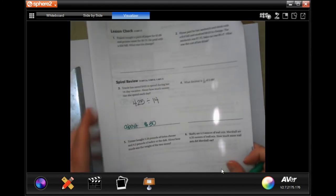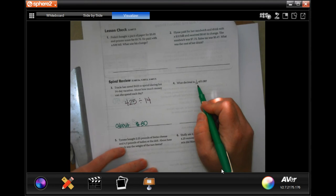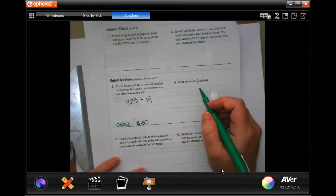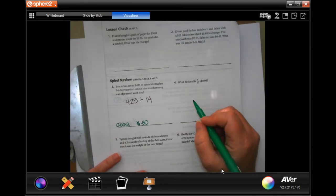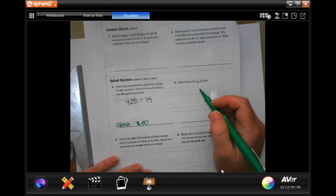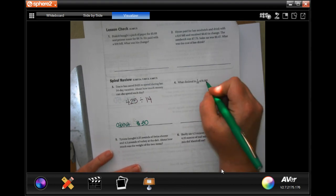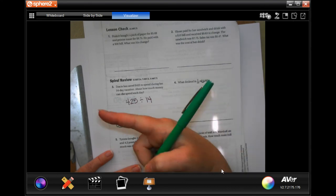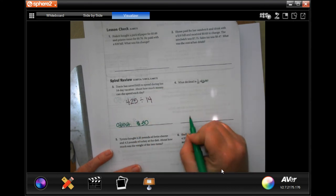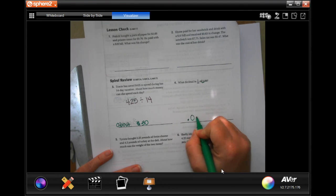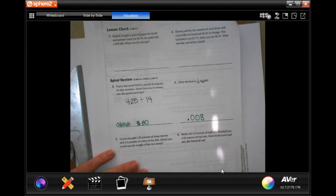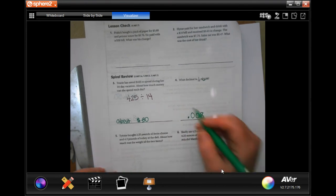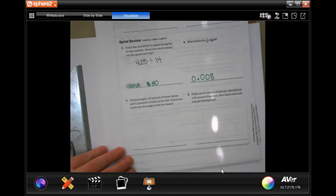Number 4 says, what decimal is 1 tenth of 8? So, it wants to know the smaller version. So, the number is going to get smaller by 10. We would divide it by 10. Which means we would move that decimal one place to the left. Which makes it 0.008. You can put a 0 in front of it. Doesn't matter. Doesn't change it.